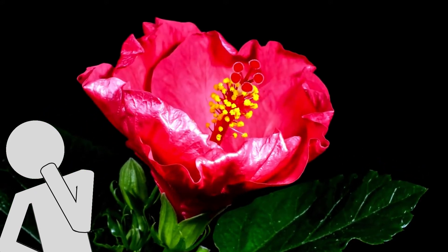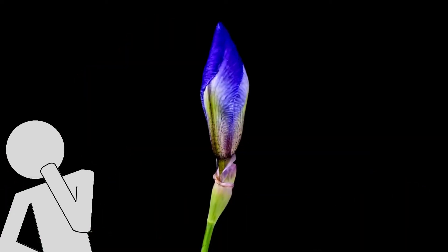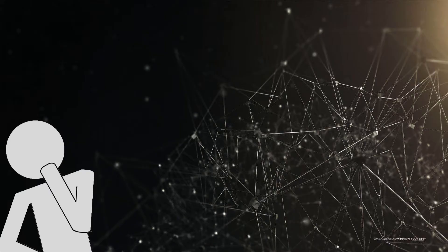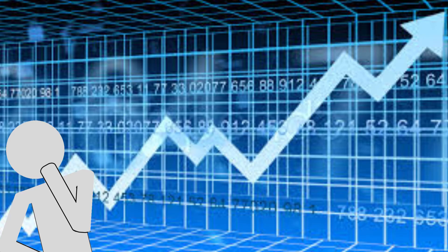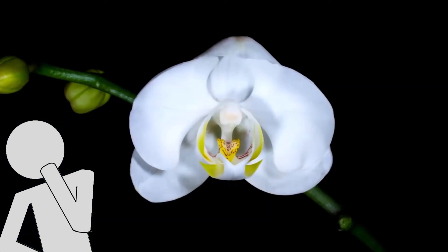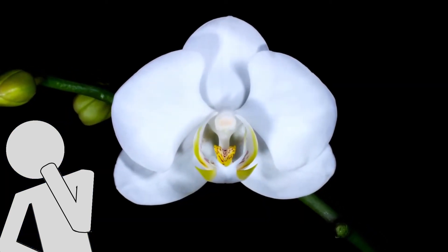Bottom-up economics, like democracy, takes its orders from the bottom — from the individual, from the workers. These orders, or votes, show up in the form of prices in the marketplace. Aggregates of small purchases act as signals to guide customers to make the most prudent choices — choices which will get life-depending resources to the greatest number of people in the shortest amount of time for the cheapest cost.